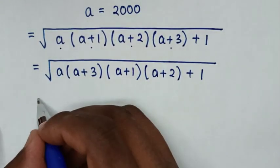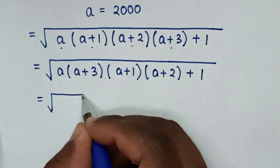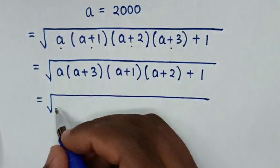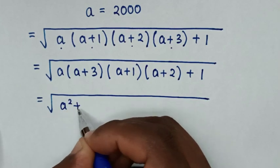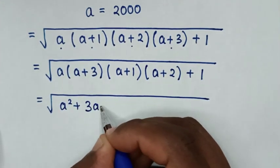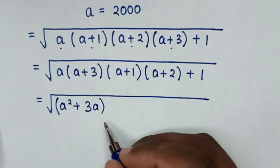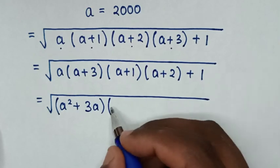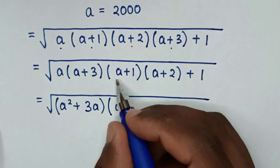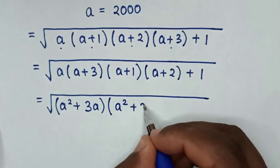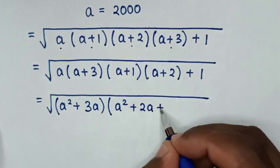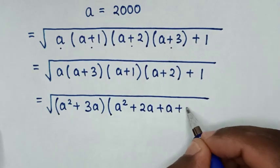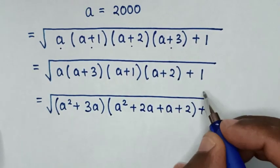In the next step, we expand this times this. (a)(a plus 3) gives a squared plus 3a. Then (a plus 1)(a plus 2) gives a squared plus 2a plus a plus 2, which is a squared plus 3a plus 2. Then plus 1.